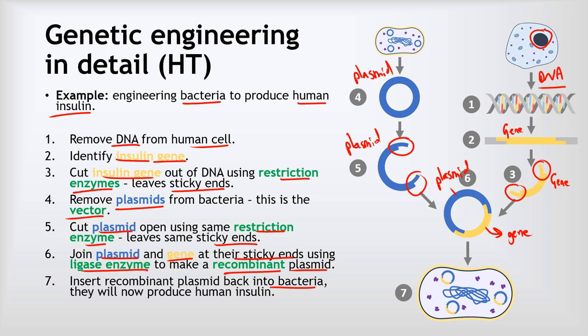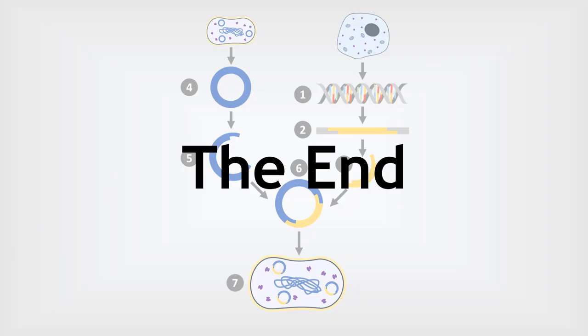Our final step is to insert the recombinant plasmid back into the bacteria. Now that bacteria has the gene to produce human insulin — we can grow and culture it, collect the insulin, and use it to treat type 1 diabetes. Importantly, now that the bacteria has the human insulin gene, whenever it divides and reproduces, the daughter cells will also contain that gene, as will their offspring. So although this process is difficult and expensive, you only need to do it once, because altering the DNA means all offspring will contain those modified genes as well.